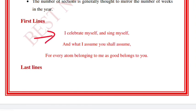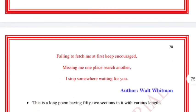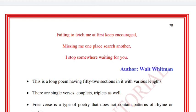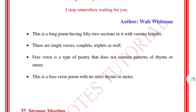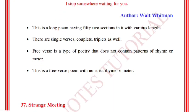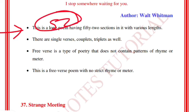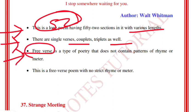The first lines are: 'I celebrate myself, and sing myself / And what I assume you shall assume / For every atom belonging to me as good belongs to you.' The last lines are: 'Failing to fetch me at first keep encouraged / Missing me one place search another / I stop somewhere waiting for you.' This long poem has 52 sections with various lengths including single verses, couplets, and triplets, and free verse is used throughout.